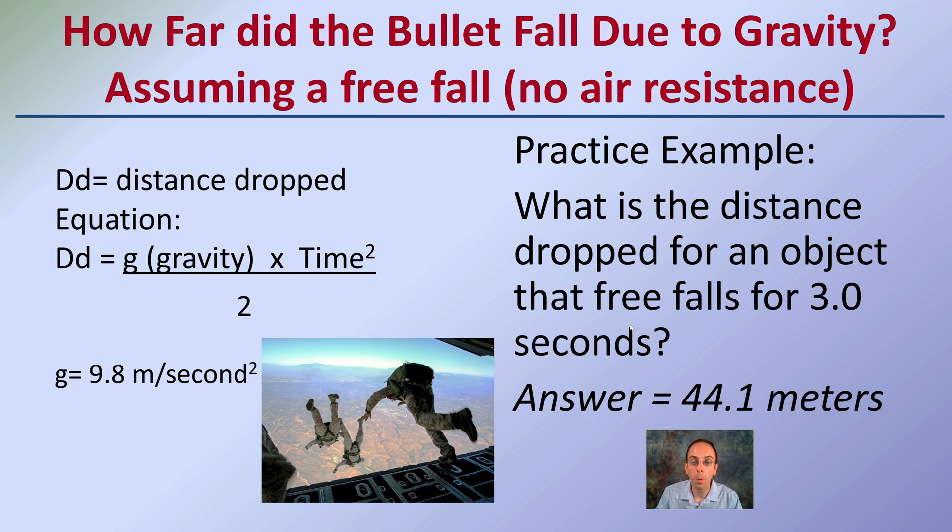Here's our time: 3.0 seconds squared times 9.8 meters per second divided by 2 will give us the answer of the distance dropped, and you should get 44.1 meters.